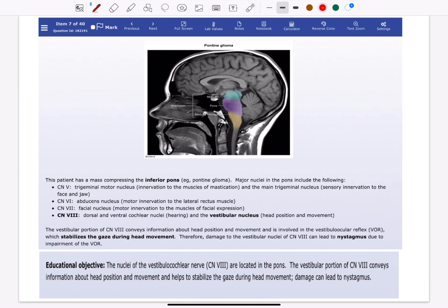The major nuclei in the pons include the fifth, sixth, seventh, and eighth cranial nerve nuclei. The nuclei of the vestibulocochlear nerve are located in the pons.